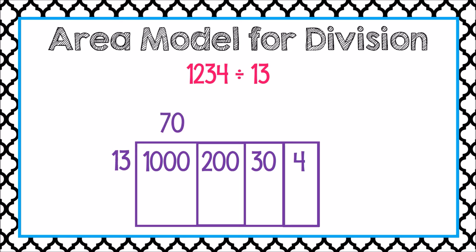How about 70? Let's see if I can divide 13 into 1,000 70 times. In other words, can I repeatedly subtract 13 from 1,000 70 times? 70 times 13 is 910. When I take 13 away 70 times, that's 910. Well, now I'm left with 90.